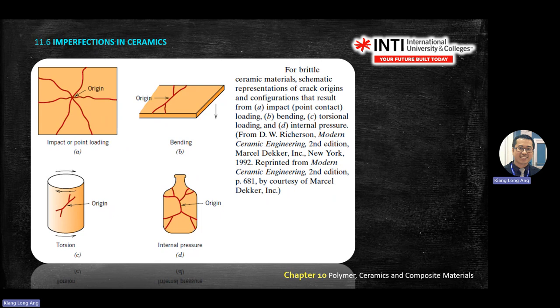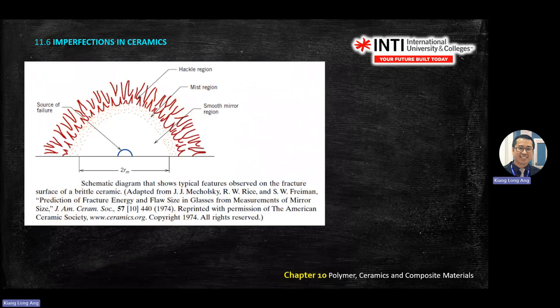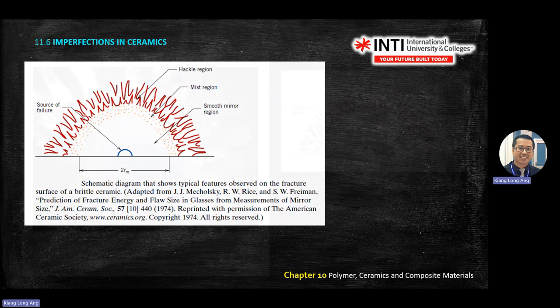This is a schematic diagram of brittle ceramic fracture. There is a source of failure that becomes a cone shape. You have a smooth mirror region first, then a mist region — a gray area with dotted pattern — and then a hackle region with spikes.